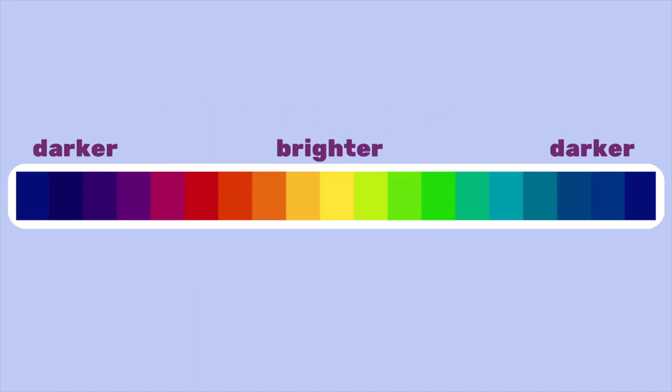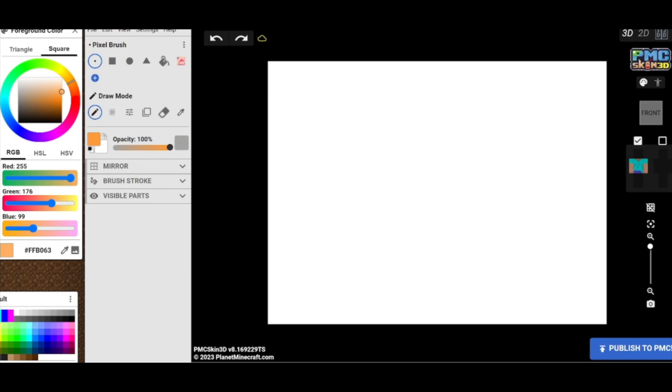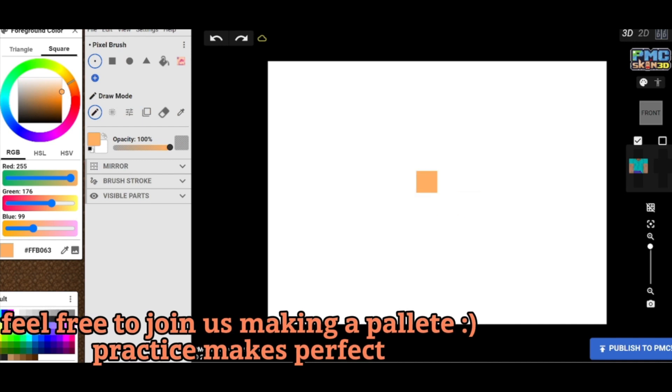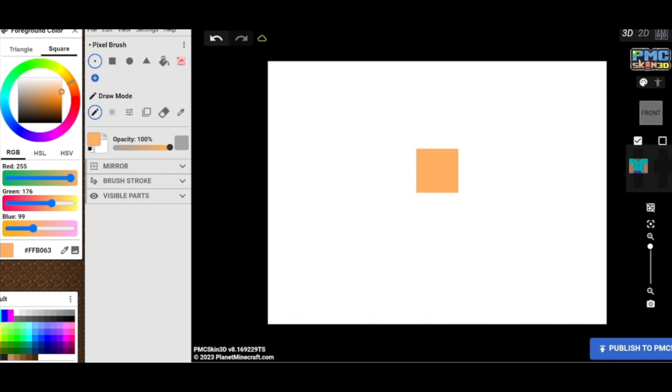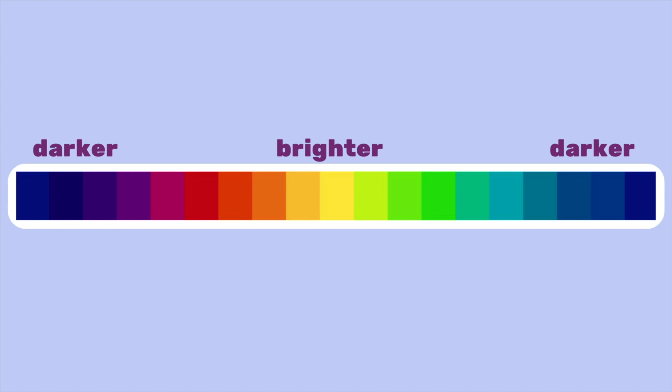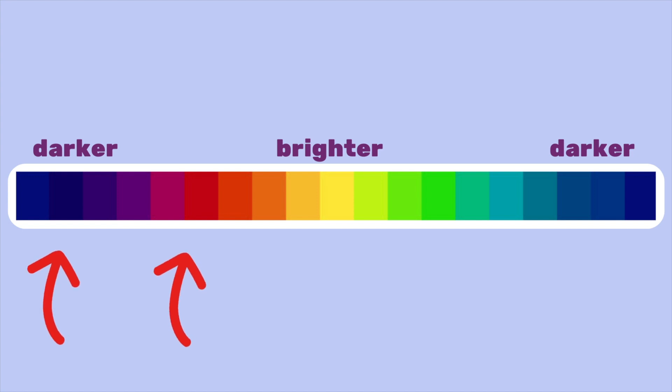To start hue shifting a color, you have to consider the value of your color. Say we have the shade orange. If we look at the color palette, we see that colors such as yellow and light green are visually lighter than orange. If we were to create shadows for the color orange, we'd want to use colors that are visually darker than our starting color. For this instance, those darker colors would be red, purple, and blue.